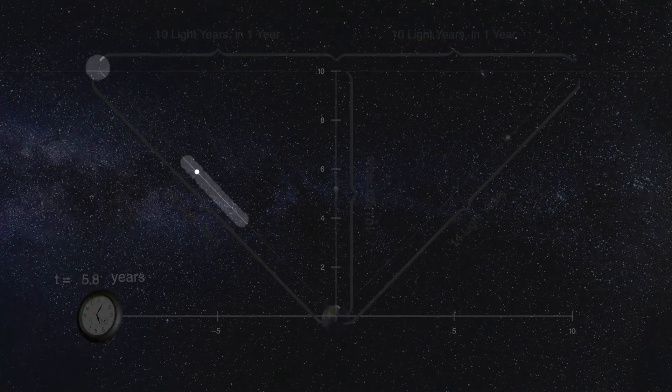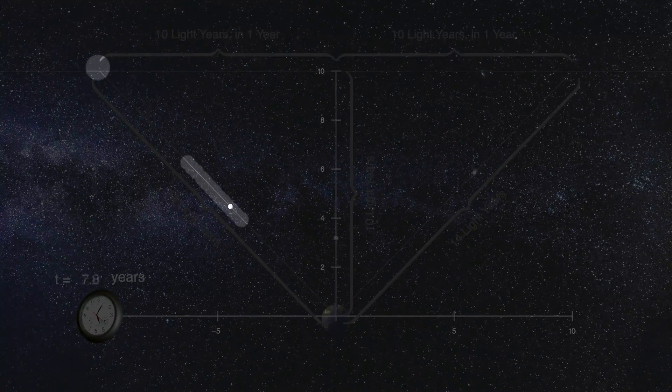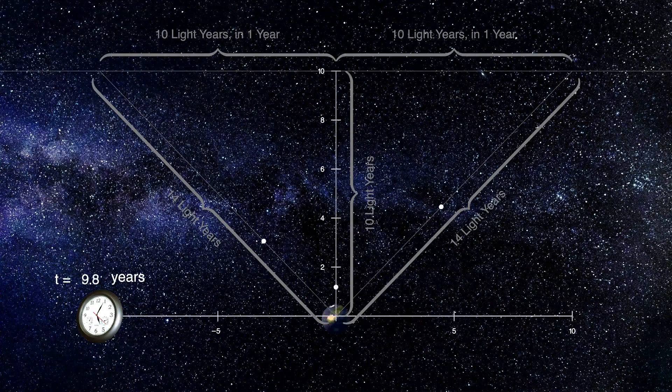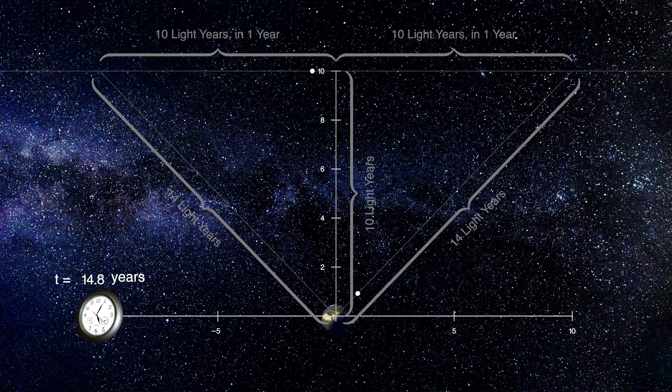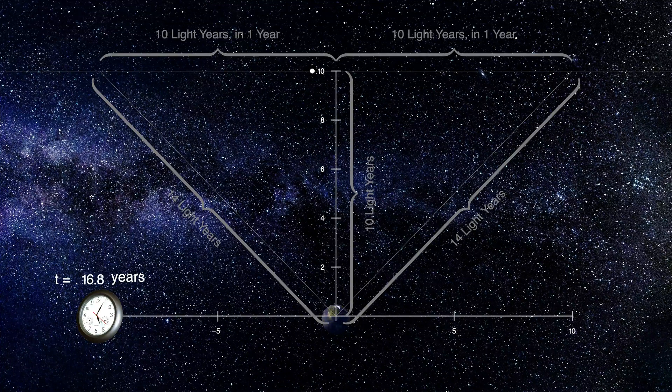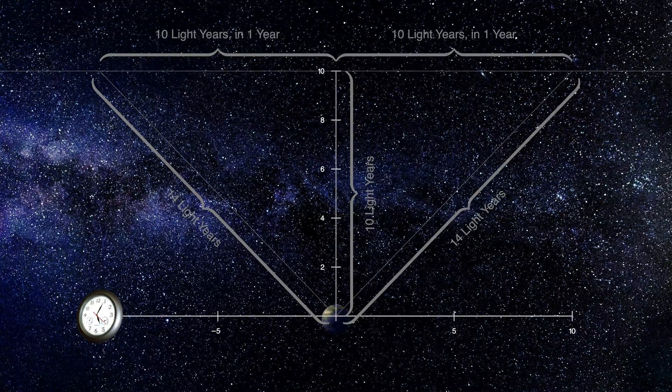The light from the object when it is on the left takes 14 years to get to us, but a year later the object is directly above us and the light from that point in space takes only 10 years to reach us. So the object would appear directly above us before it appears on the left or on the right.